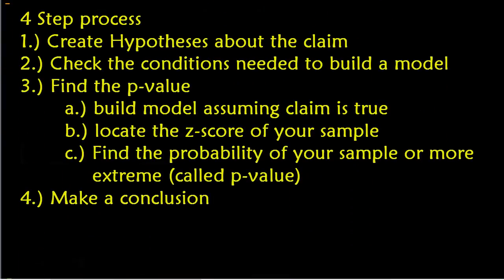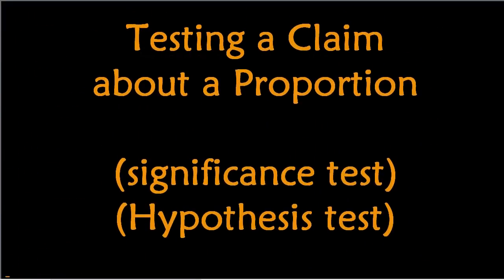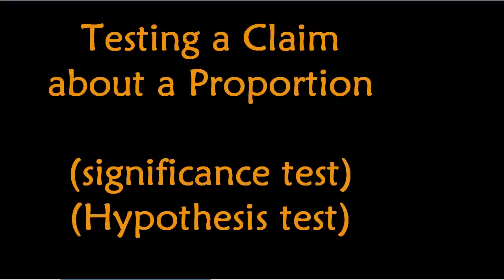To test a claim about a proportion, it is a strict four-step process. I recommend labeling your steps. Step one: create hypotheses about the claim. Step two: check the conditions needed to build a model. Step three: find the p-value — which has three sub-steps: build the model assuming the claim is true, locate your z-score for the sample, and find the probability of your sample or more extreme occurring. Step four: make a conclusion. We'll go through all those steps based on a problem.